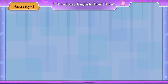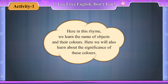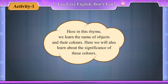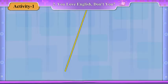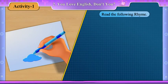Activity 1. Here, in this rhyme, we learn the name of objects and their colours. Here we will also learn about the significance of these colours. Read the following rhyme.